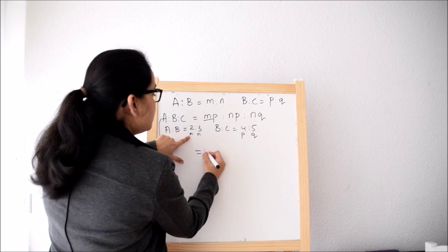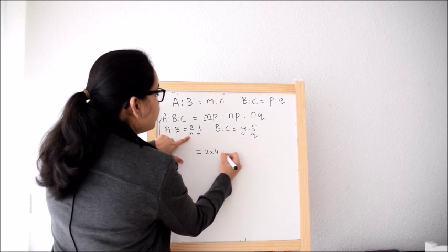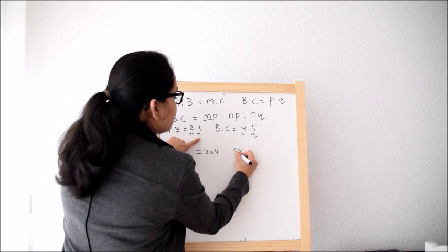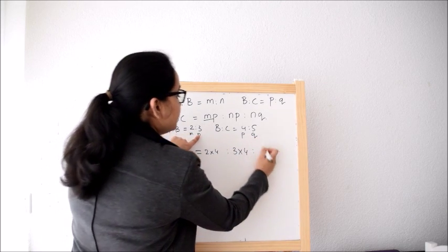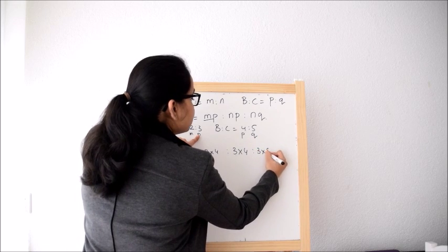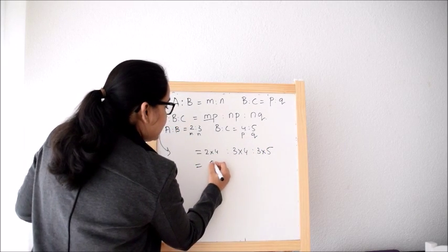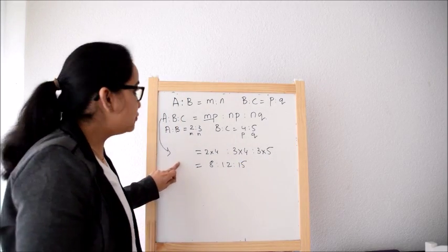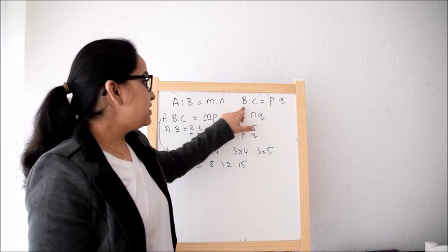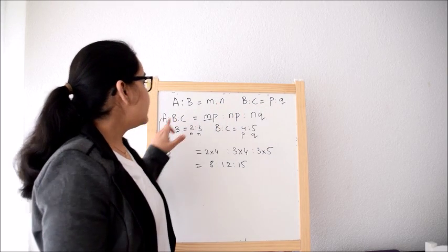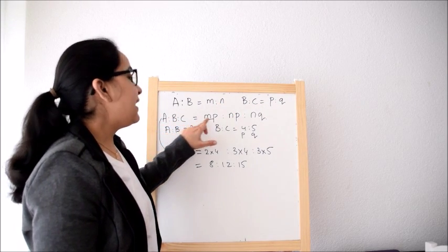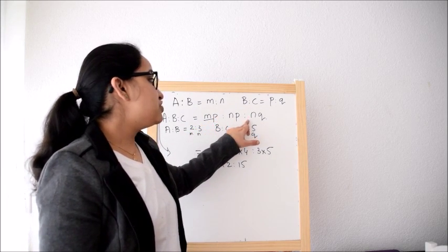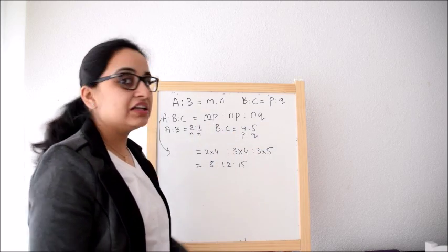So M P is 2 into P is 4 is to N P that is 3 into 4 is to N Q that is 3 into 5. So it is 8 is to 12 is to 15. So if you want you can remember this rule that if A is to B is M is to N, B is to C is P is to Q then A is to B is to C will be M P that is multiplication of M and P is to N P is to N Q and you can find the answer.